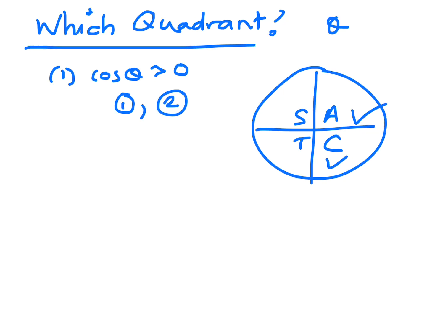That means theta could be either in 1 or 2. Just thinking about what that means, like if you went cos of something in there, cos of anything in that quadrant, like 60, 45, you're always going to get a positive answer.